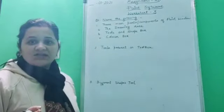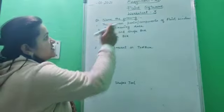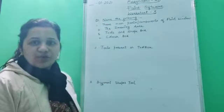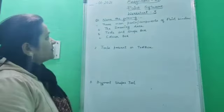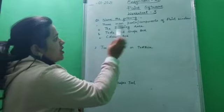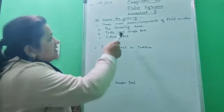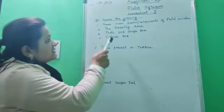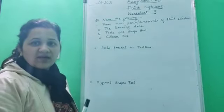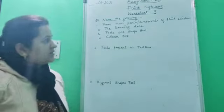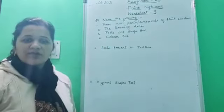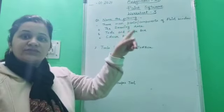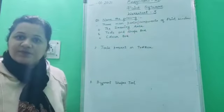So there are three main parts of a paint window: first is the drawing area, next is tools and shape box, and next is color box. Children, if the question asks for main parts or three main components, this is the answer.